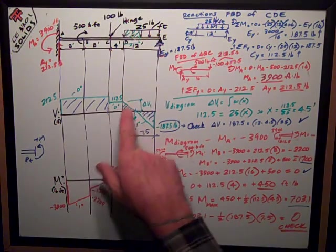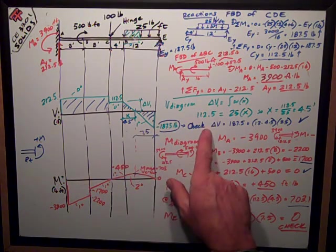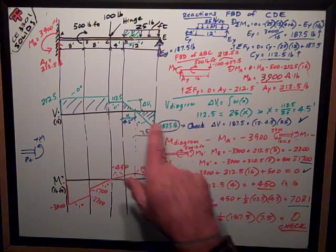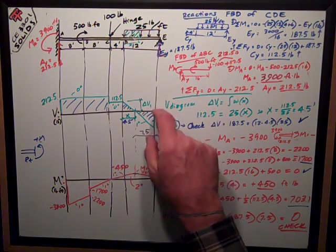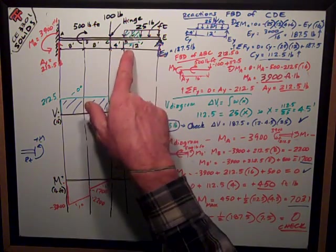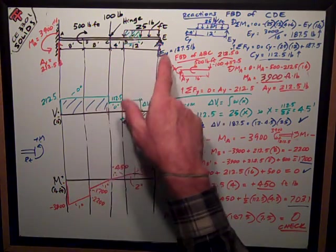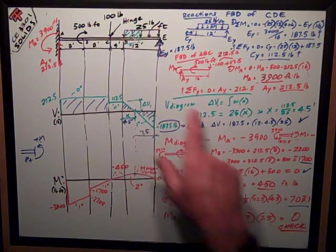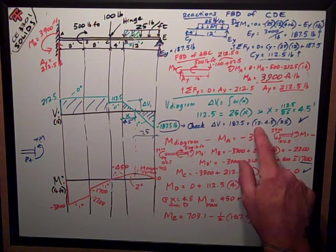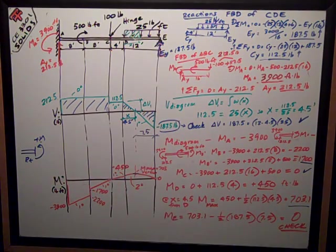Now my slope continues the same negative 25 pounds per foot on down to the end of the beam. And I would like for that to end up being negative 187.5. I can check it by the area under the load diagram. It's the right half of this rectangle. This is X is 4.5 so the dimension to the right of it is 7.5, 12 minus 4.5 times the height of 25. So 187.5 does equal 7.5 times 25 so it checks out. My shear diagram closes.